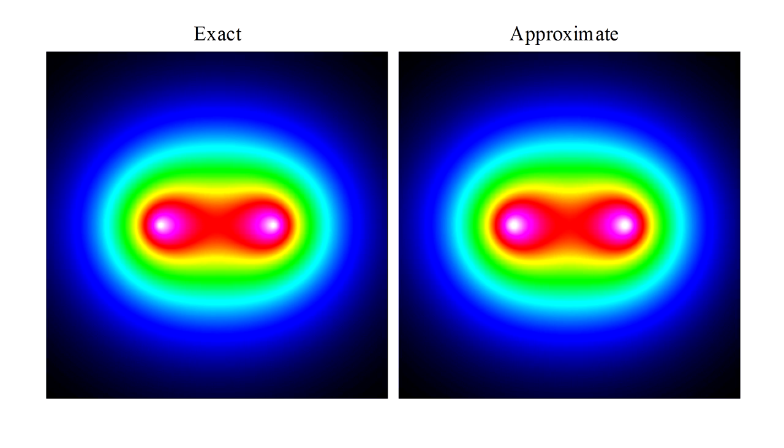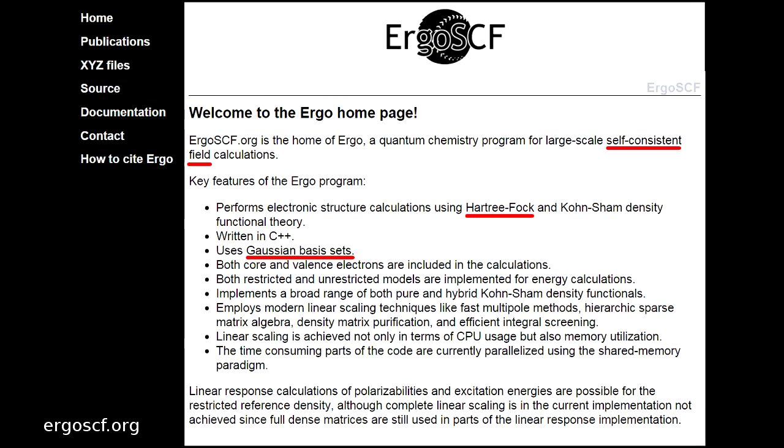So, with a finite number of simple Gaussians, we can construct a highly accurate approximation to the true molecular wave function.